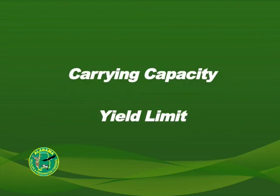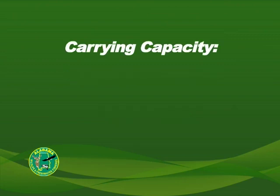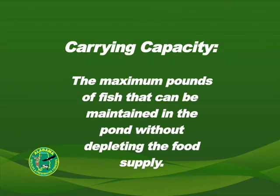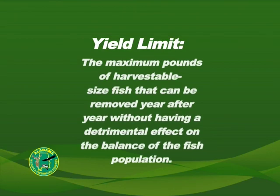Carrying capacity and yield limit are terms often used by biologists when discussing the management of fish populations. The carrying capacity of a pond is the maximum pounds of fish that can be maintained in the pond without depleting the food supply. Yield limit is the maximum pounds of harvestable size fish that can be removed from a pond year after year without having a detrimental effect on the balance of the fish population.